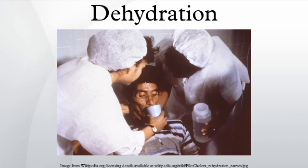The treatment for minor dehydration, often considered the most effective, is drinking water and stopping fluid loss. Plain water restores only the volume of the blood plasma, inhibiting the thirst mechanism before solute levels can be replenished. Solid foods can contribute to fluid loss from vomiting and diarrhea. Urine concentration and frequency will customarily return to normal as dehydration resolves.